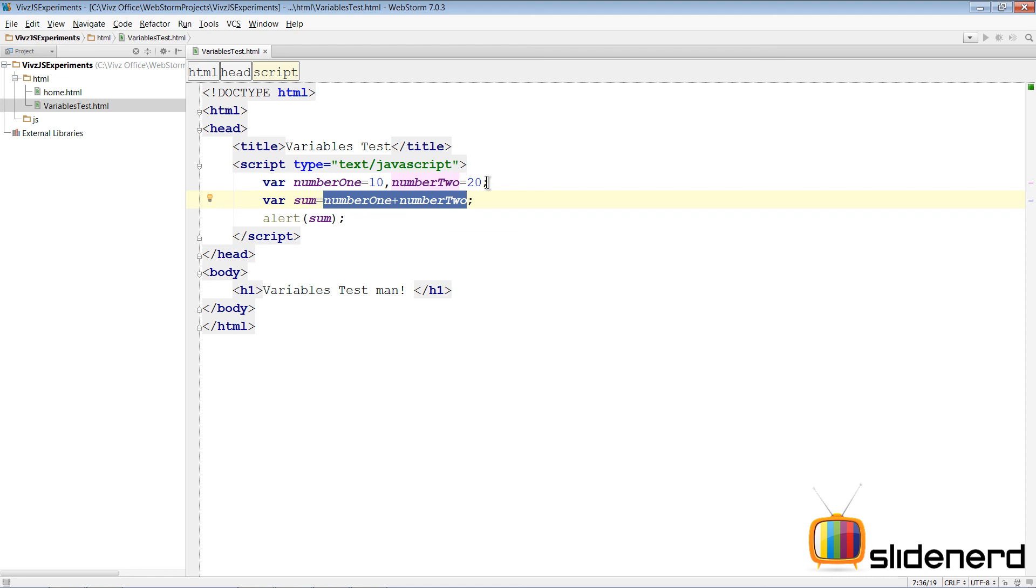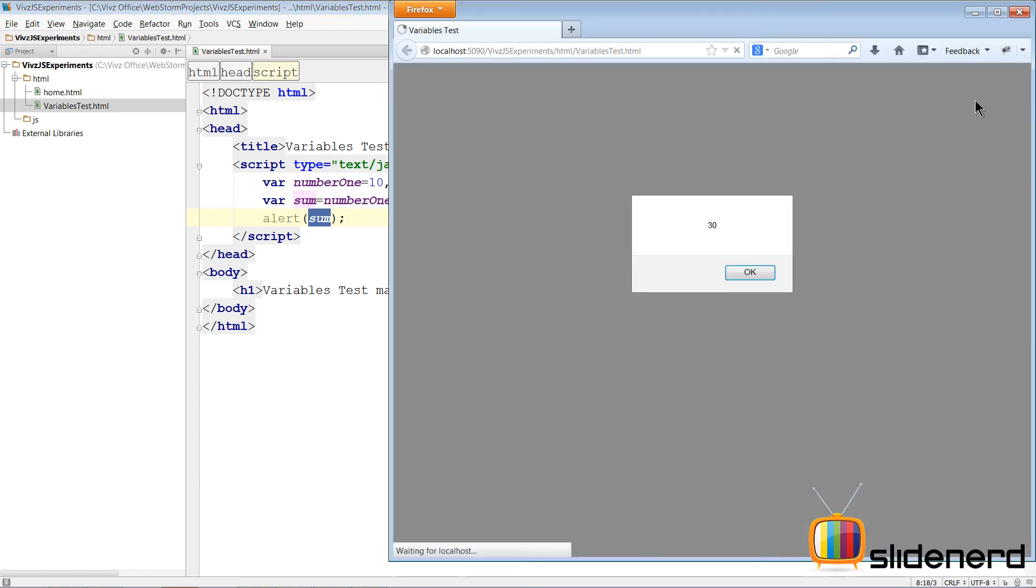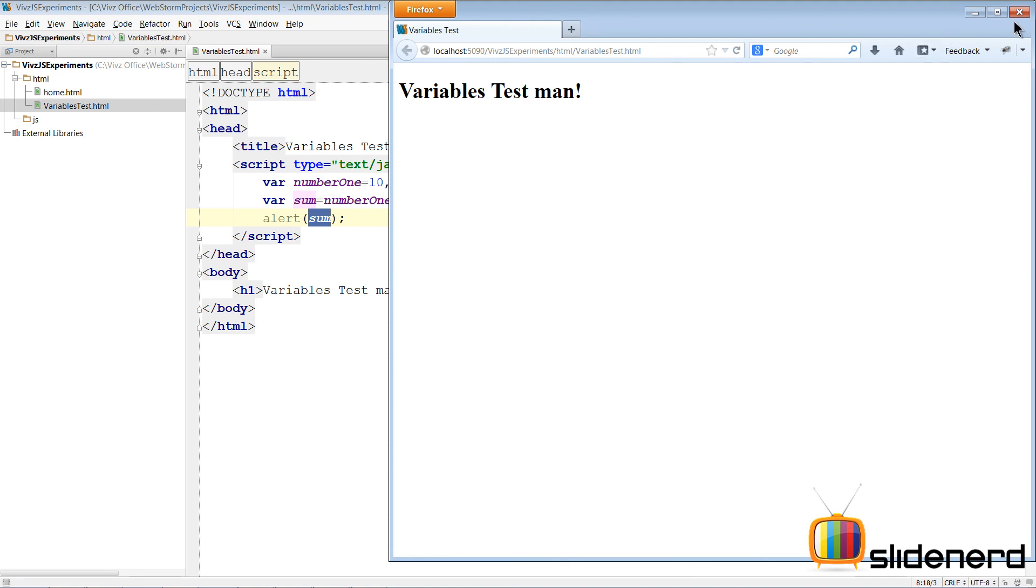That thirty is going to be stored inside the variable sum. When you print sum, the value displayed on the screen is thirty. Go to Mozilla Firefox and run that. As you notice it says thirty. That's how variable declaration and variable stuff works in JavaScript.